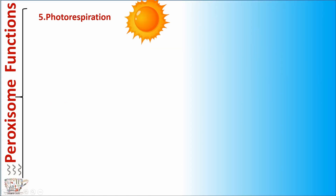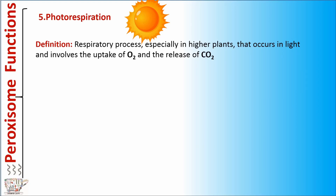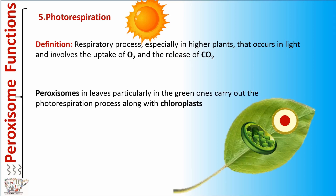Function number five: photorespiration. Photorespiration is a respiratory process, especially in higher plants, that occurs in light and involves the uptake of O2 and the release of CO2. Proxysomes in leaves, particularly in the green ones, carry out the photorespiration process aligned with chloroplasts.